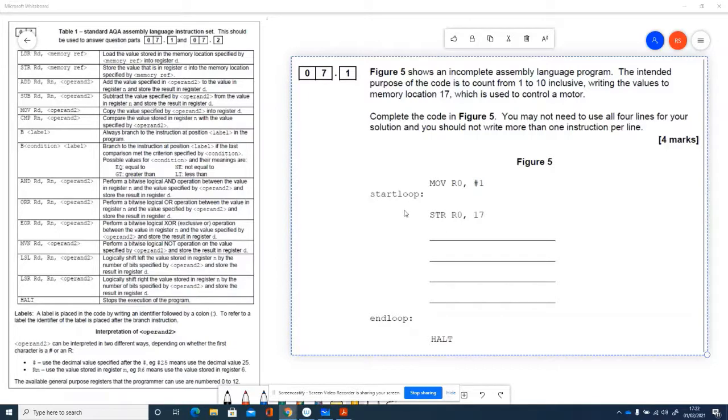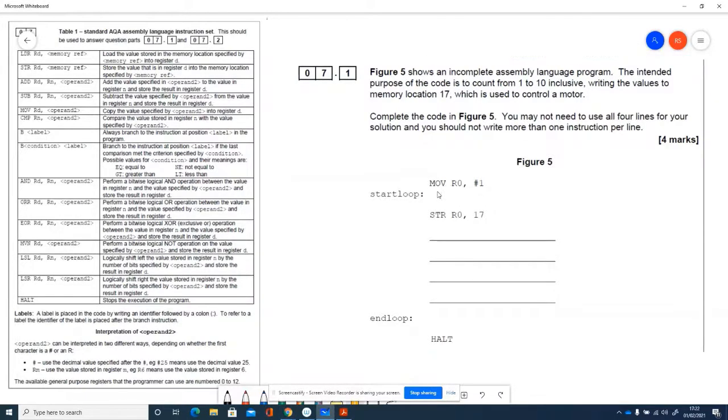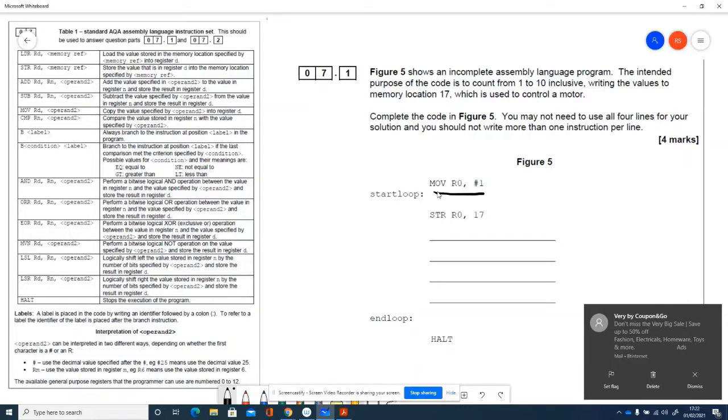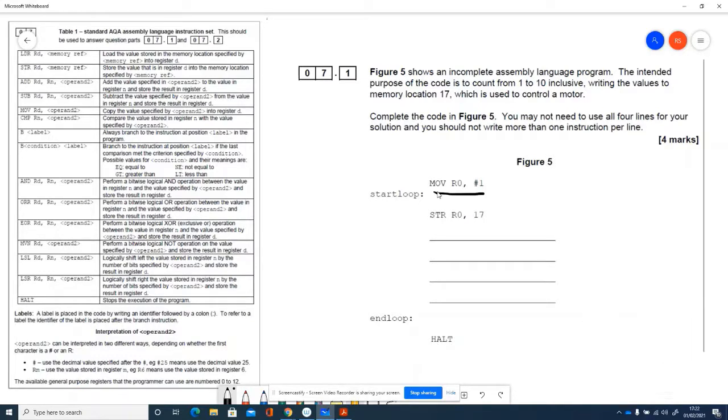So we've got some code already. The first bit of code we've got is move, so we've got move r0 hash 1. So if we look across at where it says move we've got move rd operand 2 and we're copying the value specified by operand 2 into the register d. So register we're looking for is r0.